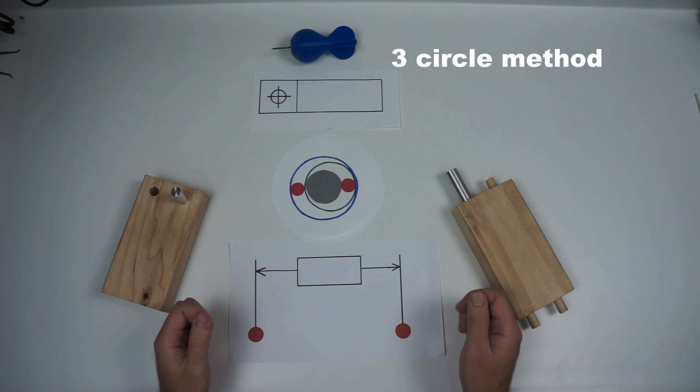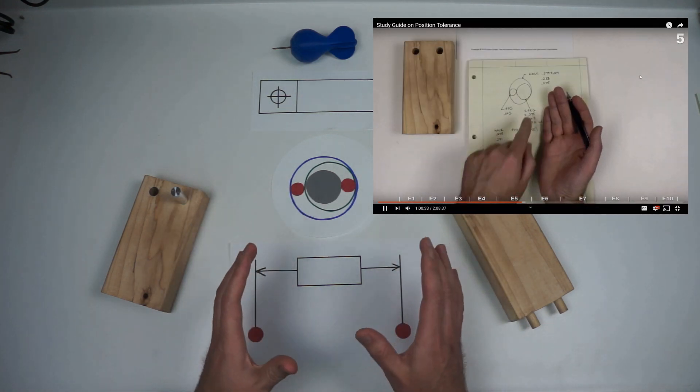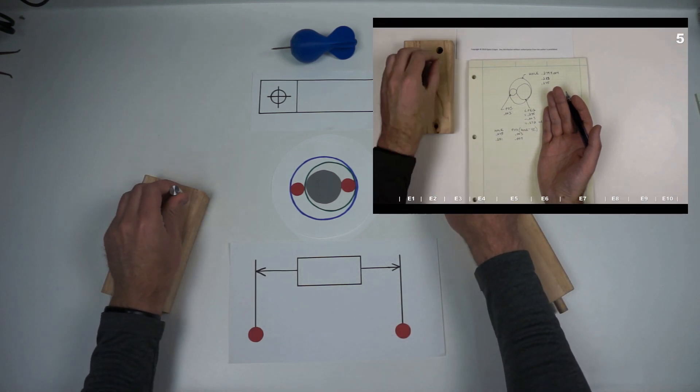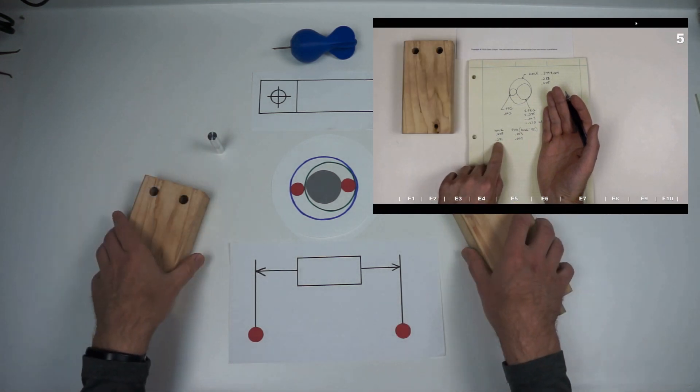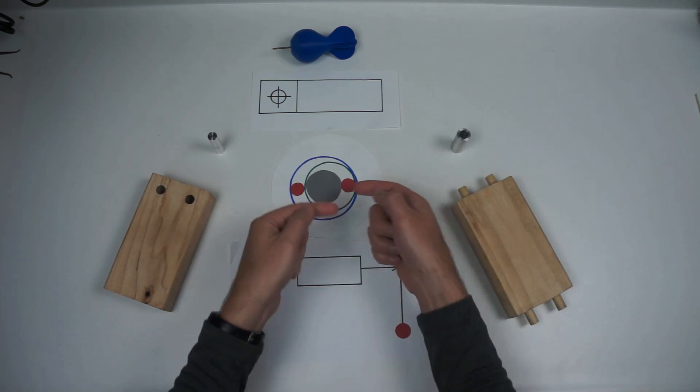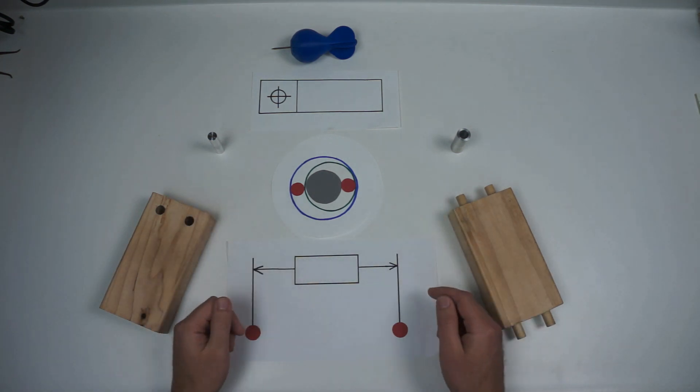It helps you calculate, especially if you're struggling with this concept of the fit of the pegs and the holes. It's a really simple way of drawing a few circles on your print and then quickly calculating whatever number that you might need.